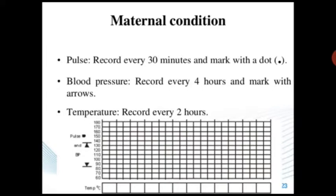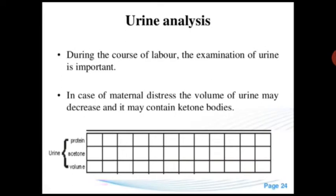Maternal condition: pulse is recorded every 30 minutes marked with a dot, blood pressure every four hours marked with an arrow, and temperature every two hours. Urine analysis: during labor, examination of urine is important. In cases of maternal distress, urine volume may decrease and may contain ketone bodies. Urine protein, acetone, and volume should be recorded.